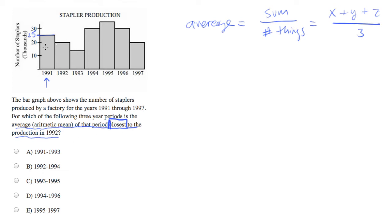What is production in 1992? It appears to be about 20. So we want to know which of these periods averages closest to 20.